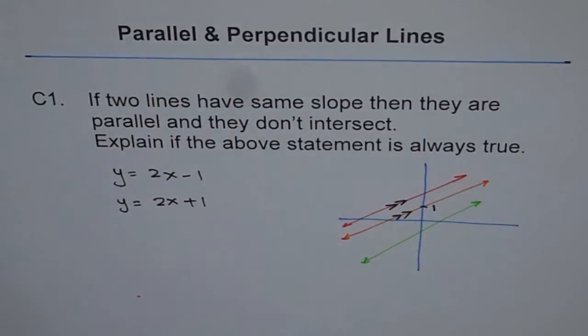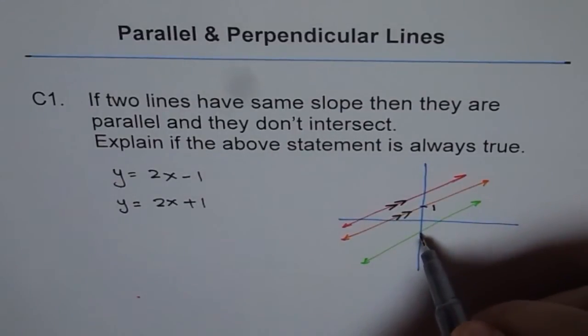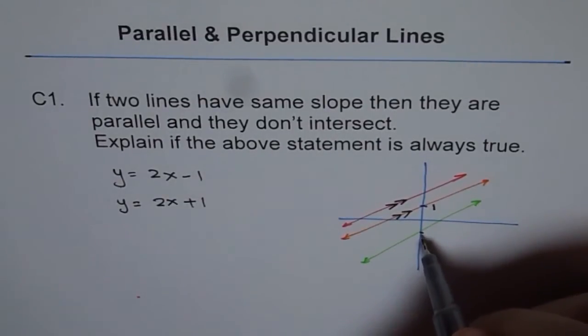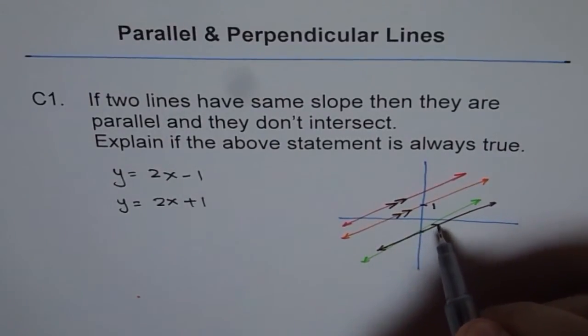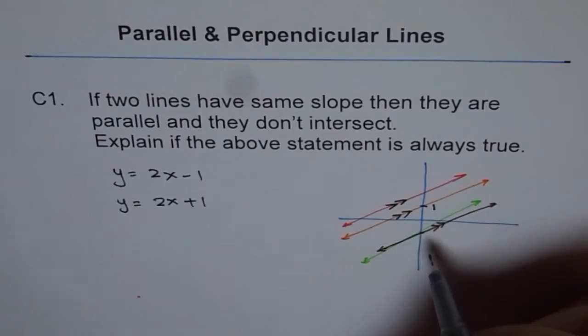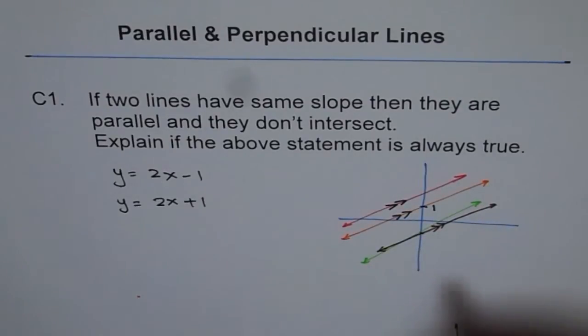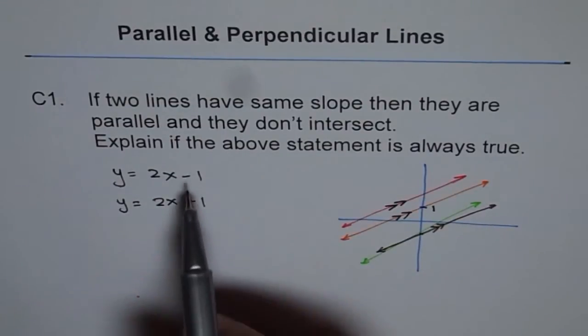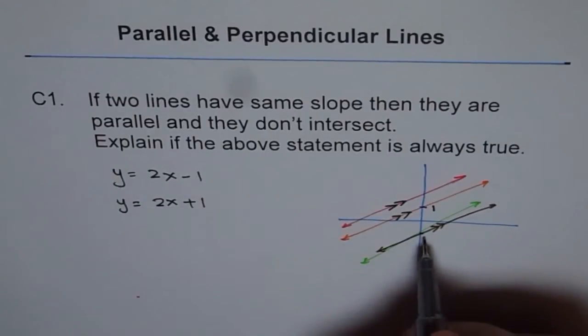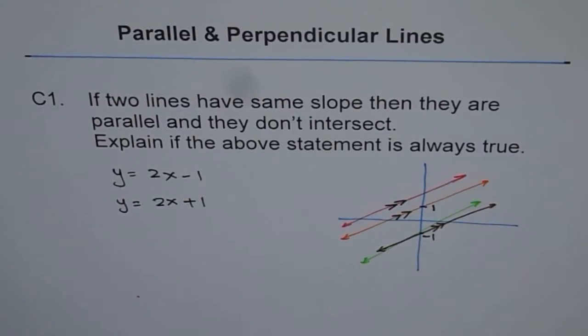Now, the other line with intercept y at minus 1 and parallel to this line will go through a point, let us say here, which is minus 1. And the slope has to be same. So it has to be like kind of like this. Do you see that? Now I can say my little two arrows like this saying that these two lines are parallel and they have same slope. And in this particular case, if I am saying their equation is 2x minus 1 and 2x plus 1, which one belongs to which?